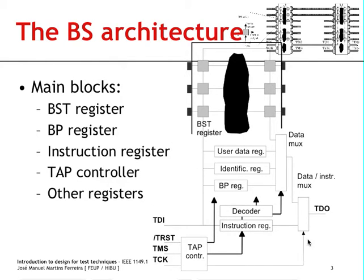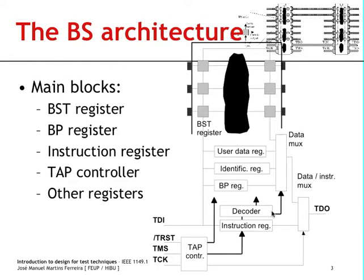The boundary scan architecture interacts with the external world using the so-called test access port, which comprises either four or five PINs because the test reset PIN is optional. Normally you will only find four PINs: the test data input for scanning in test vectors, the test data output for scanning them out, the test clock, and the test mode select which controls what happens in the boundary scan infrastructure.